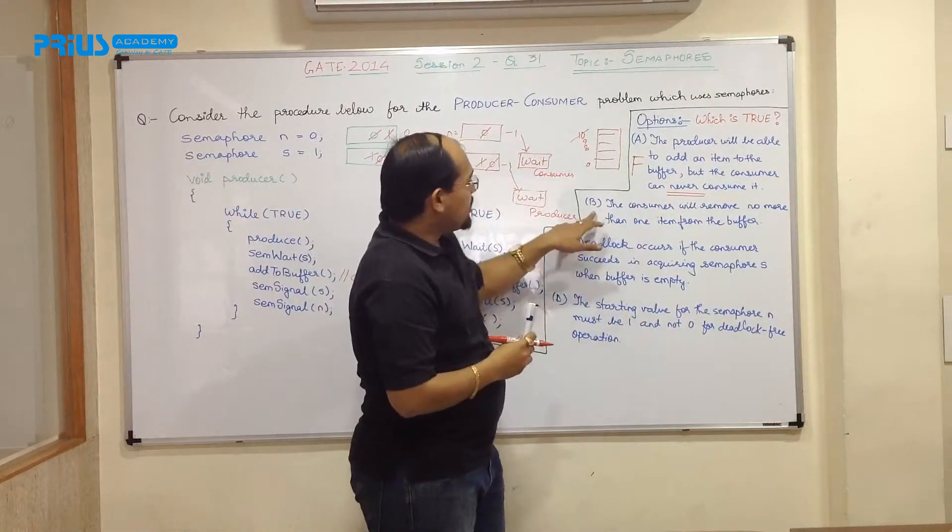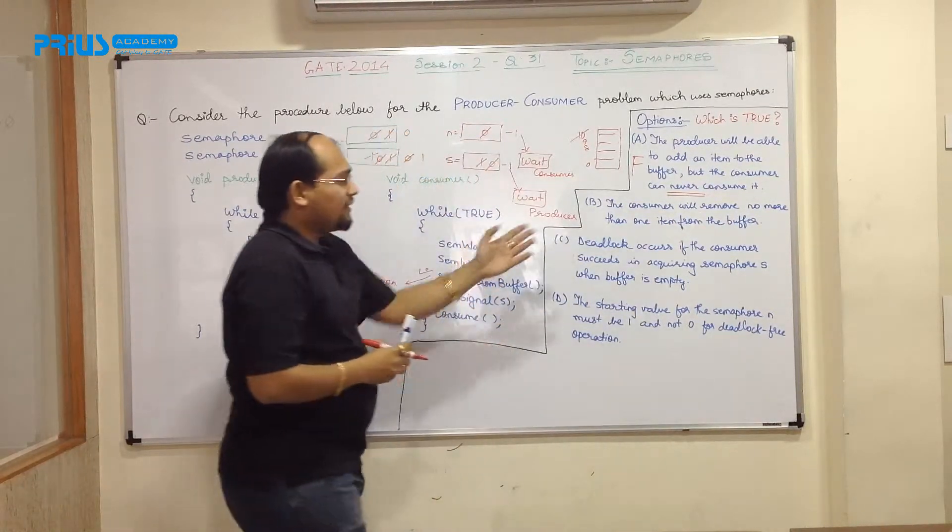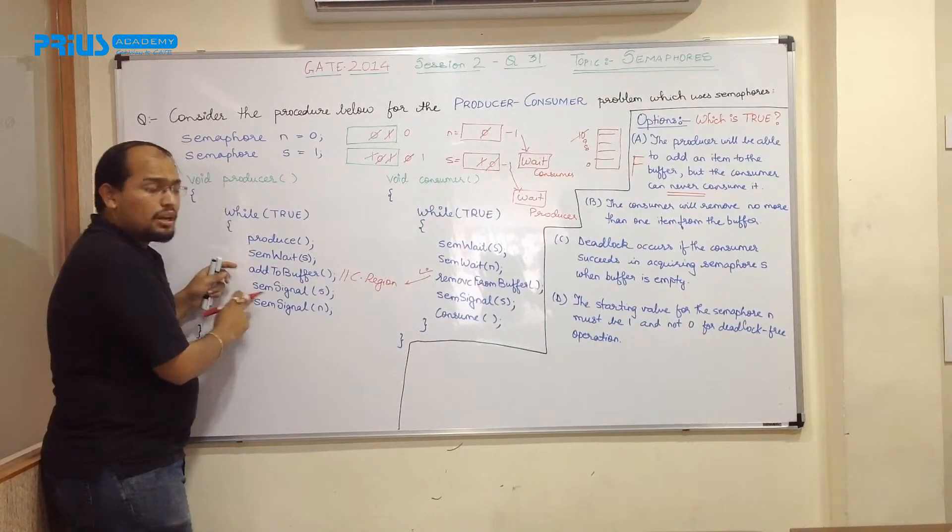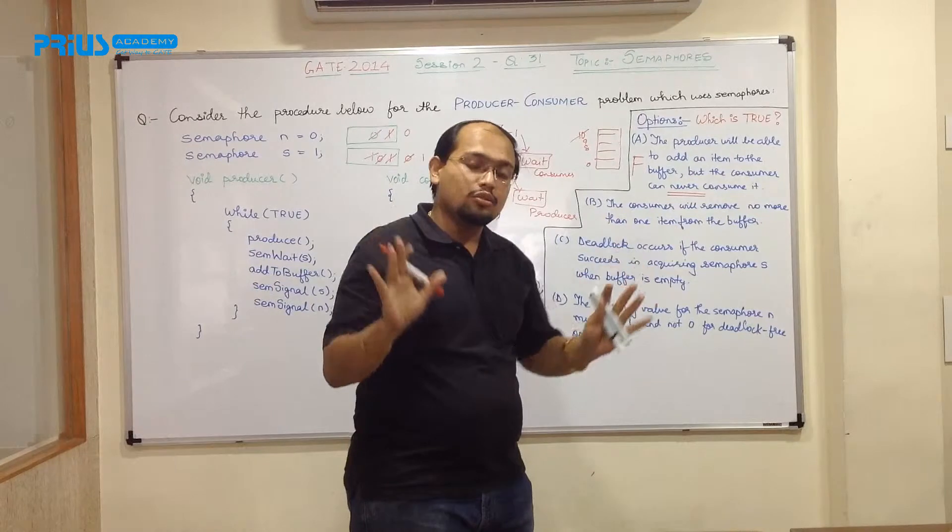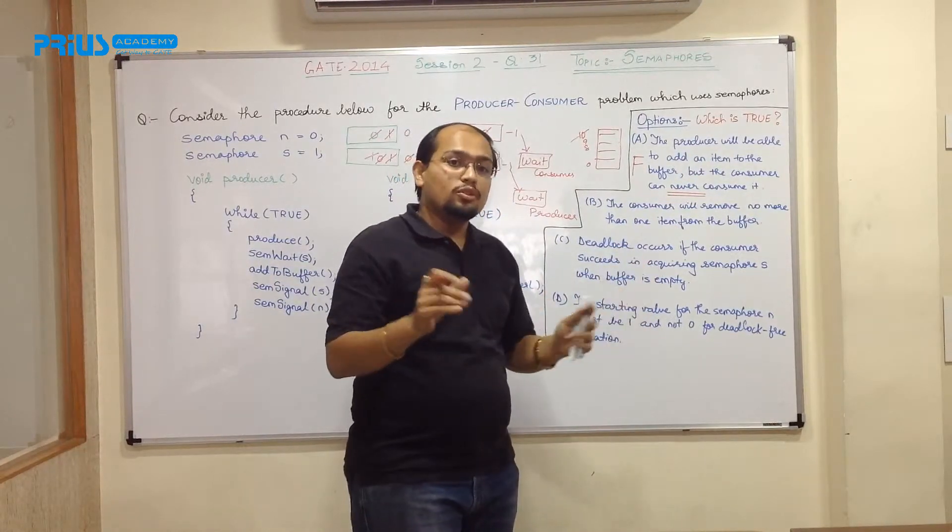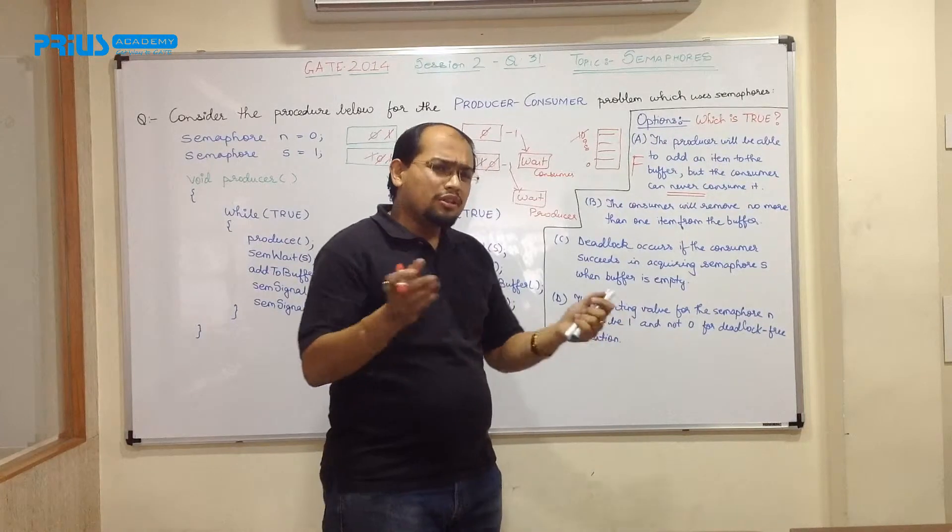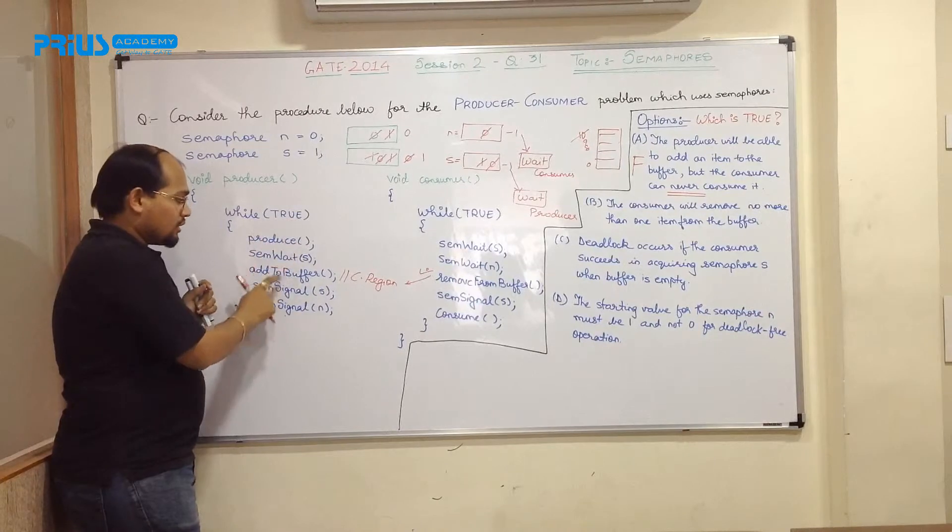Moving to second B, the consumer will remove no more than one item from the buffer. See, let us see whether it is true or false. Over here, producer is producing an item and let's say consumer is little bit lazy like me, you know, he likes to sleep and he don't want to consume the things. And producer is very smart enough, he is like a current company where he is continuously producing the things. So producer is running again and again, it is a true condition.